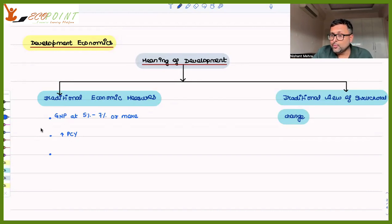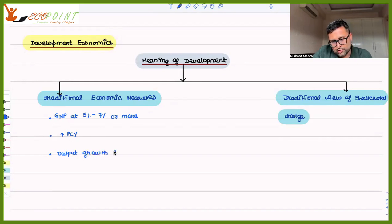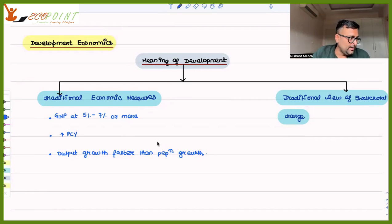Particularly, output growth has to be more than population growth. If output is not growing faster than population, then whatever increases in output occur will be taken away by population growth. So output growth must be faster than population growth — that is a key condition in the traditional view.